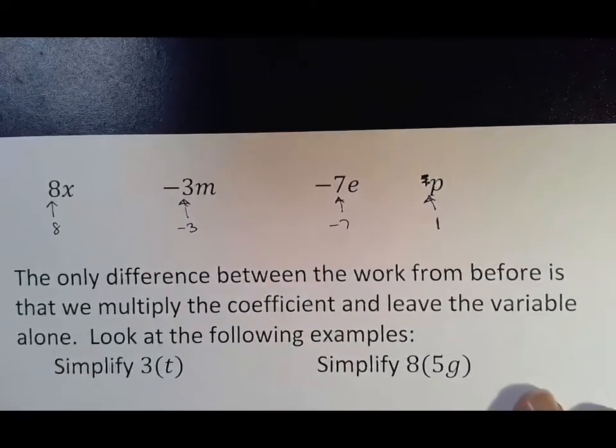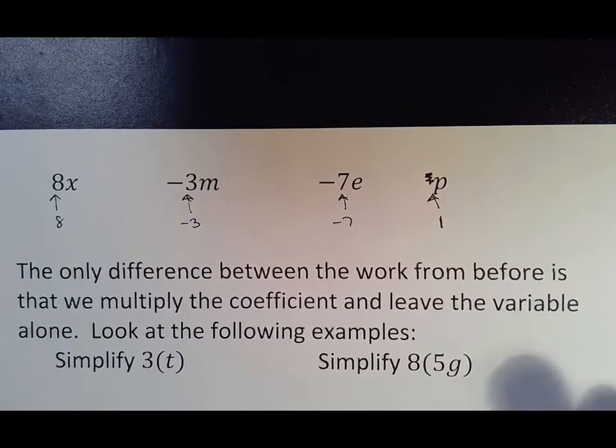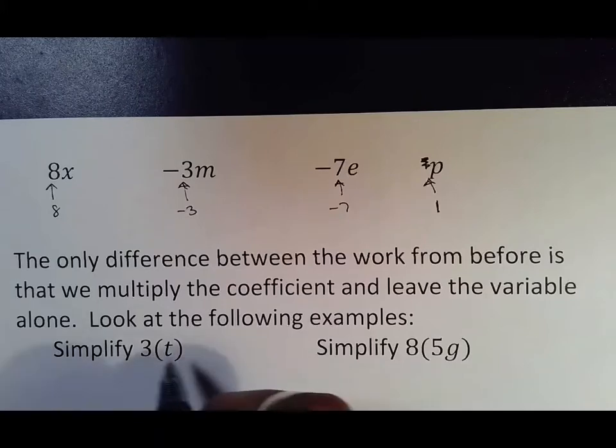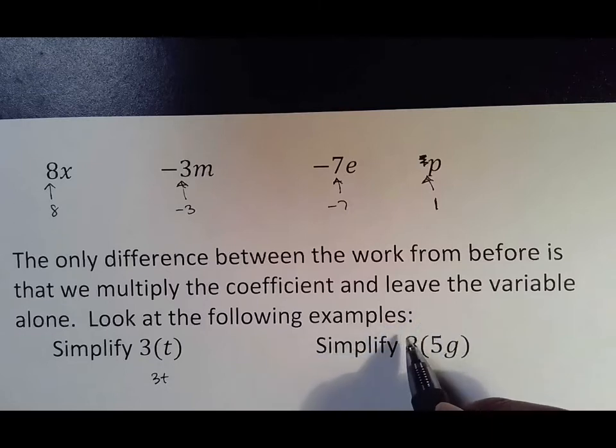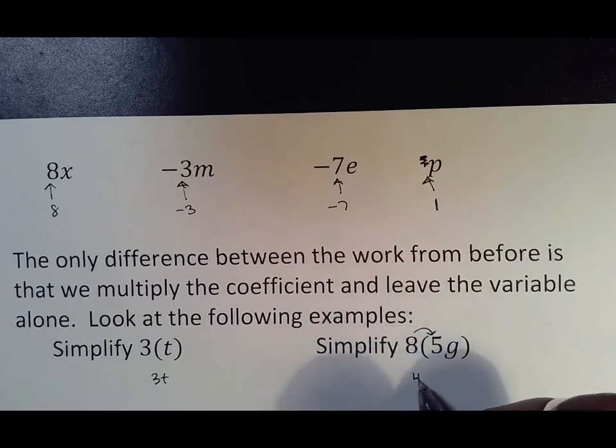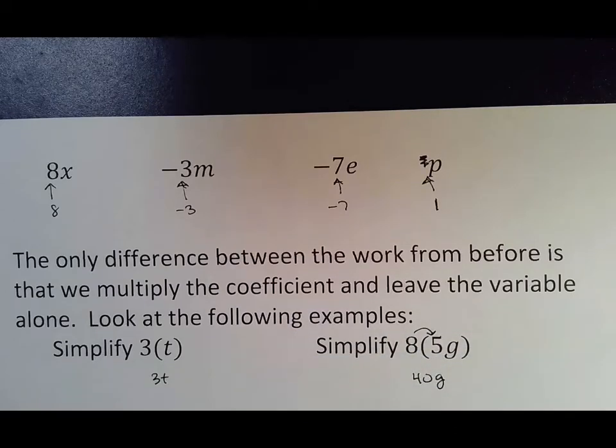The only difference between the work from before is that we multiply the coefficient and leave the variable alone. What we did before was 3 times t—that's just 3t. But if we do 8 times 5g, we multiply the 8 by the 5, which is 40, and bring the g down with it. That's the adjustment we're making today.